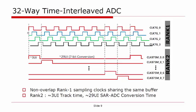The rising edge of the rank-1 sampling clock is aligned with the rising edge of the rank-2 sampling clock. For the 32-way TI ADC, the total time for sampling and conversion is 32 symbols, or 32 UI. Out of that 32, 3 UI is allocated for sampling and 29 UI is allocated for 7-bit conversion.